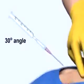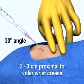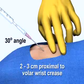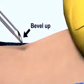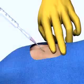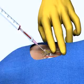Enter the skin at a 30 degree angle at a point 2 to 3 cm proximal to the volar wrist crease, directly over the arterial pulsation. Note that the bevel of the needle should be facing upwards so that the lumen of the needle faces the flow of oncoming arterial blood. As you advance the needle into the vessel, pulsatile blood will fill the flash chamber.